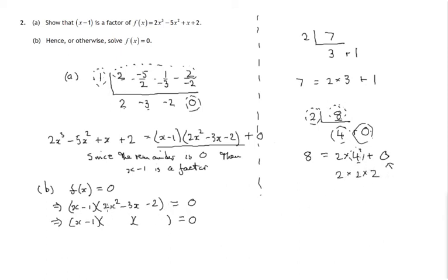So let's check that. The first terms would have to be 2x times x, and then only 2 possibilities: 1 times 2 or 2 times 1, and I think you'll find that 1 and 2 there works when we get